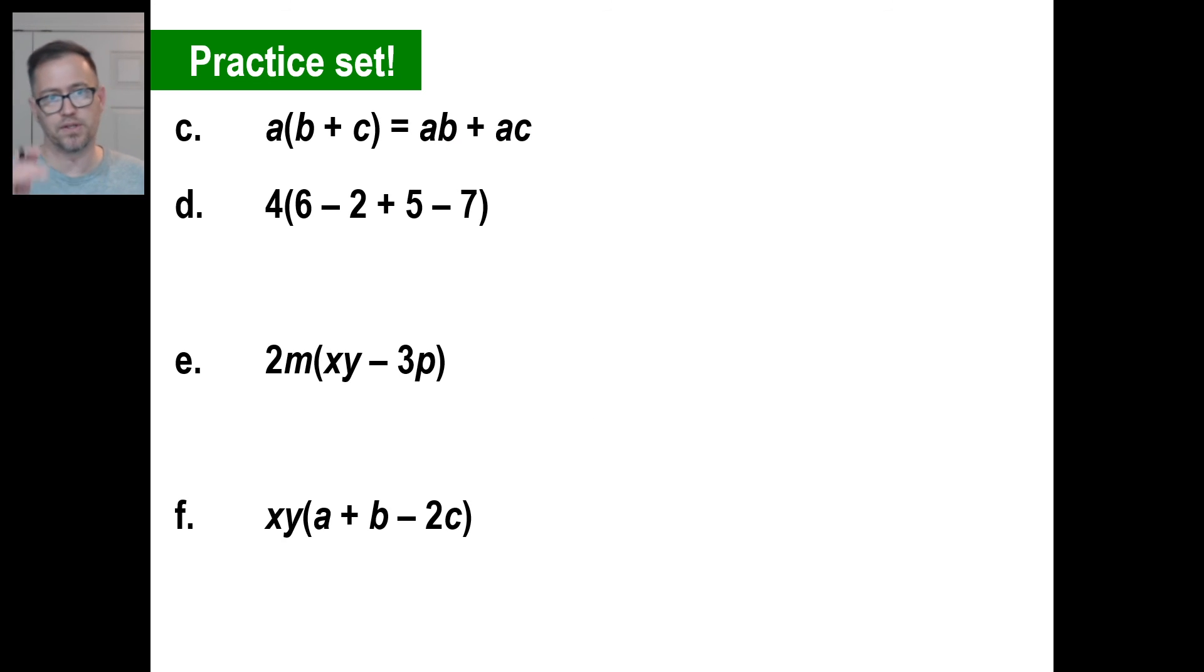Let's try C. Pause it and try C and come back. Well, we kind of already did C. That's the distributive property. Let's go ahead and do D. Pause D and come back with it. I'm assuming you've paused. I'm just going to prove that this works. 6 minus 2 is 4, 4 plus 5 is 9, 9 minus 7 is 2. So the answer is going to be 4 times 2 or 8. Let's put this over here. But we can go ahead and distribute the 4. Times the 6 would be 24, 4 times negative 2 is negative 8, 4 times 5 is 20, and 4 times negative 7 is negative 28. 24 minus 8 is 16, 16 plus 20 is 36, and 36 minus 28 is, look at there, 8. So we just proved that it works.